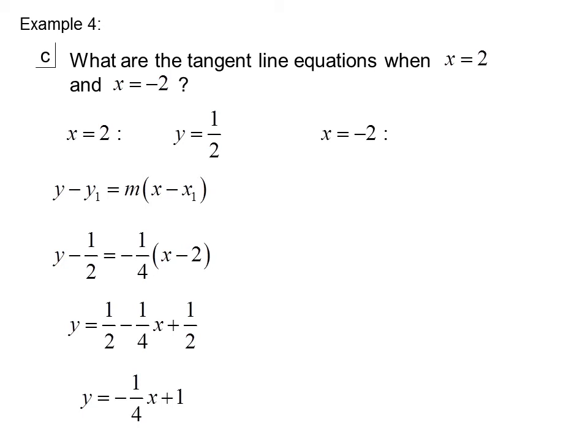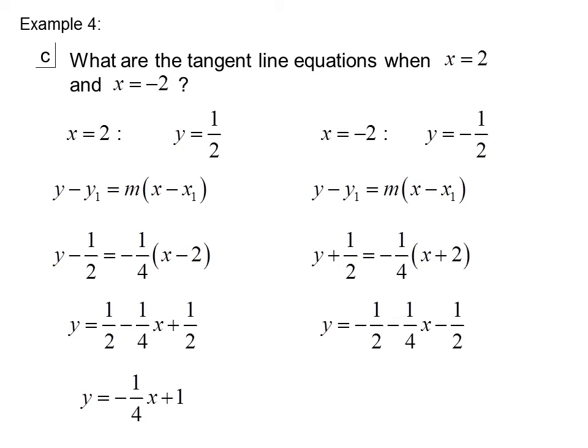We do the same thing at x equals negative 2. We find y, then use the point-slope equation, fill in our values, and solve for y and simplify it. So we get y equals negative one-fourth x minus 1.